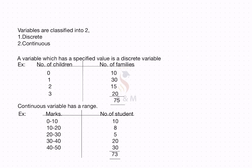The variables are classified into two: the first one is discrete variable and the second one is continuous variable. A variable which has a specified value is a discrete variable. Here, number of children and number of families are given. Number of children — 0, 1, 2, 3 — this is a discrete variable, as it has a specified value.